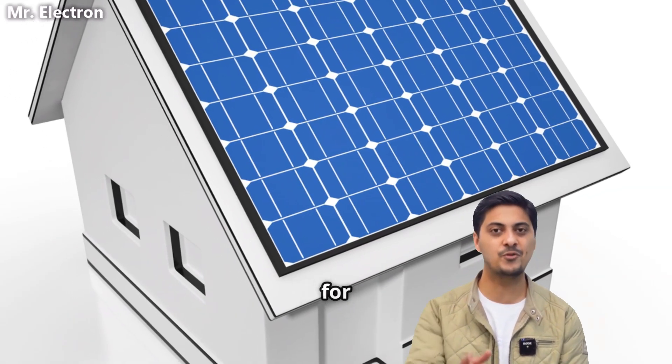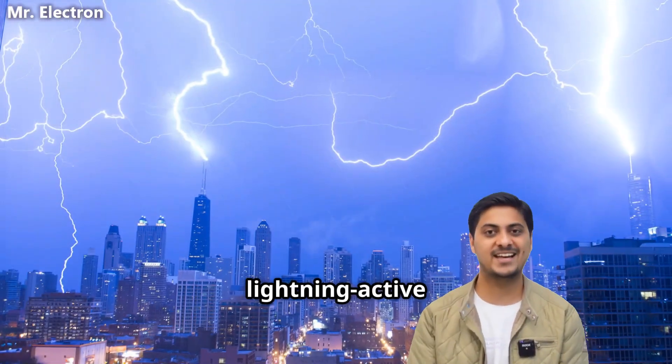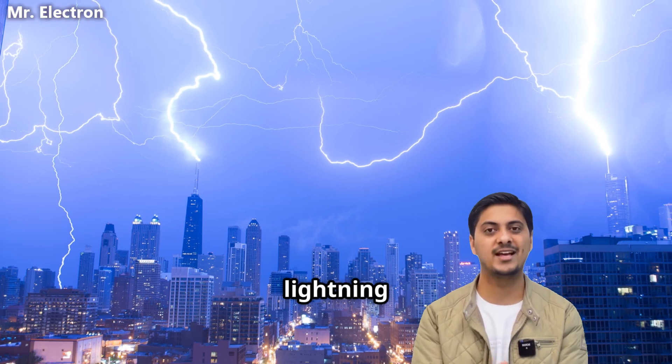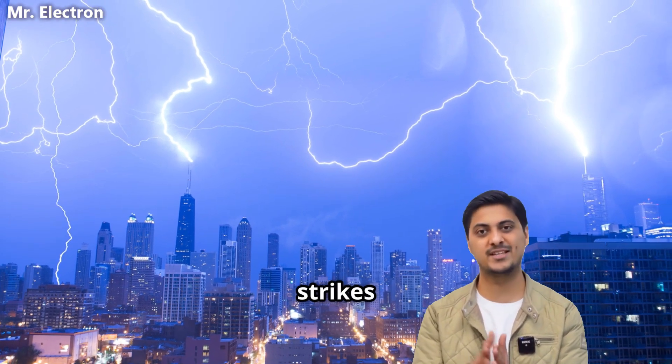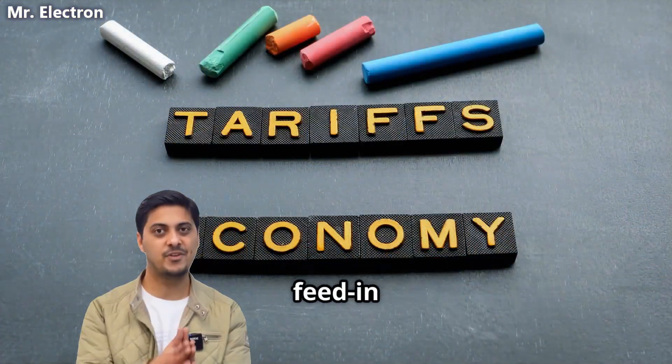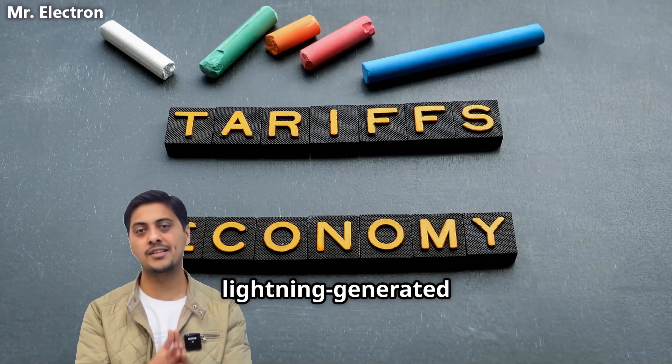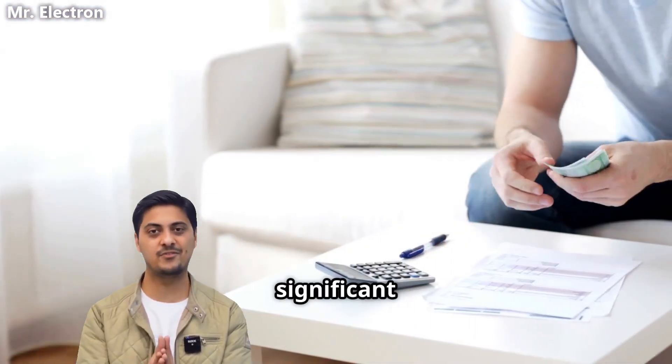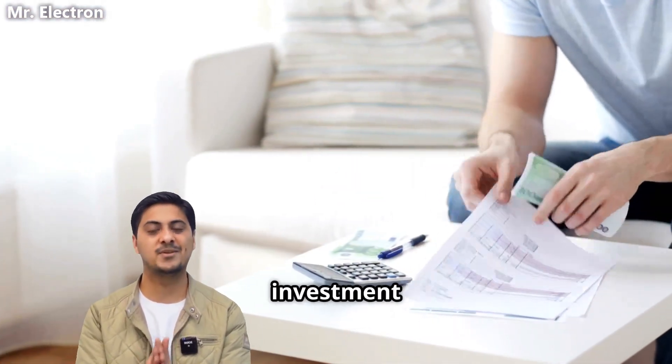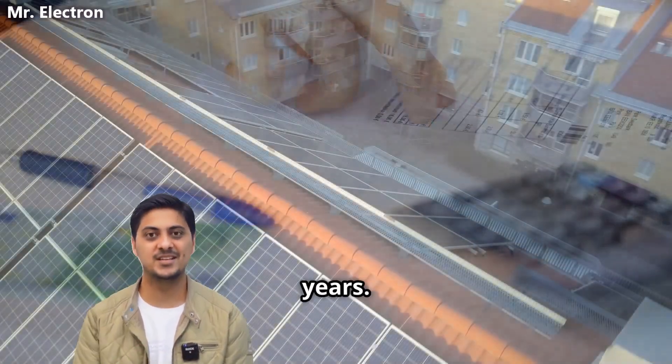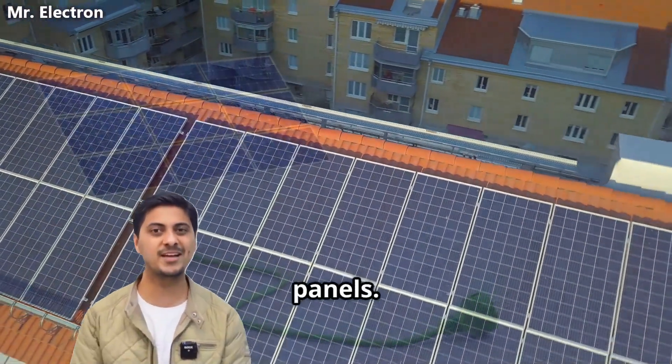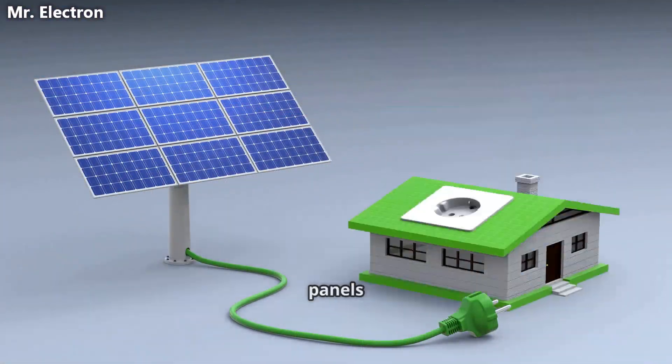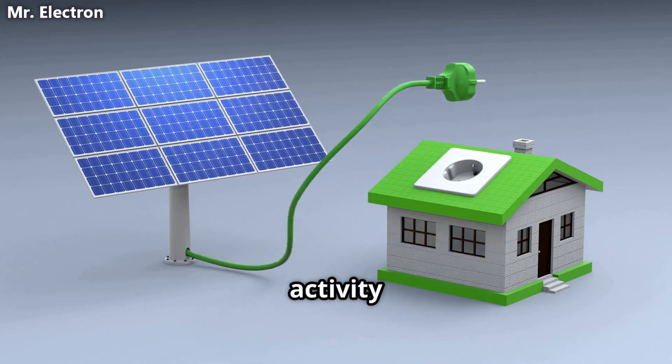Each lightning strike capture delivers roughly 280 kilowatt-hours of electricity, enough to power an average home for nine days. In lightning-active regions, buildings with tall lightning rods experience multiple strikes monthly. Government feed-in tariffs for lightning-generated electricity provide building owners with significant income, making the investment payback within five years, similar to solar panels.